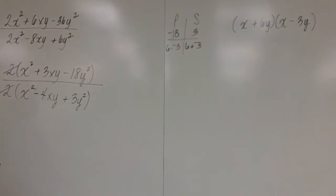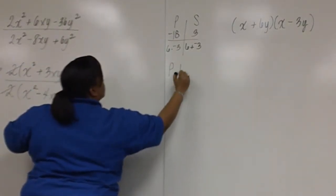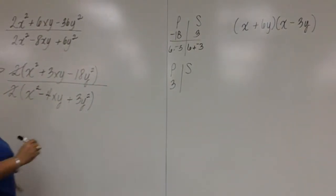So the numerator has been completely factored. But now we have to factor the denominator. We need a product of 3 and the sum of negative 4.